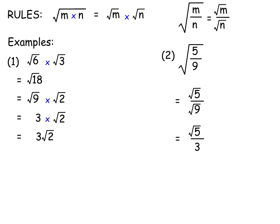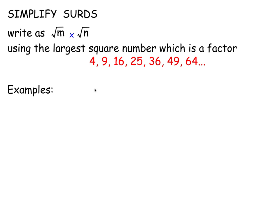These surds have been simplified. Here's the general rule for simplifying surds: write the surd as a product of two roots where one of the numbers is a square number — like 4, 9, 16, 25, 36 and so on. These are square numbers, meaning you can square root them exactly: square root of 4 is 2, square root of 9 is 3, square root of 16 is 4. This is mostly what we deal with when dealing with square roots.